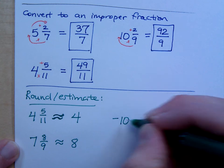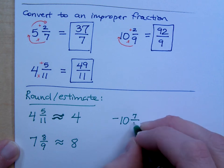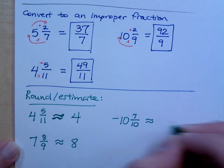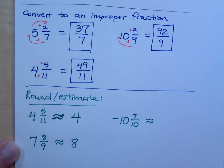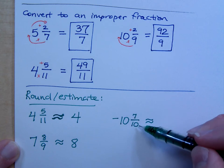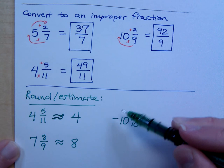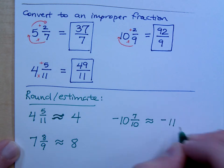If I have negative 10 and 7 tenths. Look at the fractional part. What's half of 10? 5. 7's more than 5, right? So this guy's closer to being the next whole value, which would be negative 11. That's the closest one that it would be to.